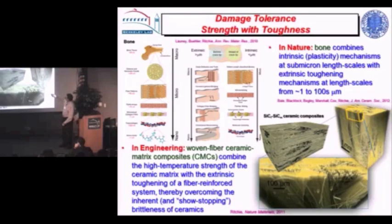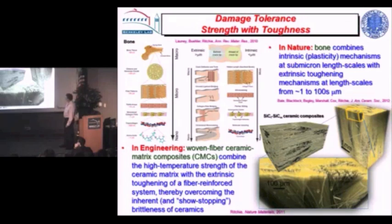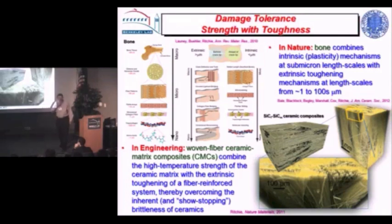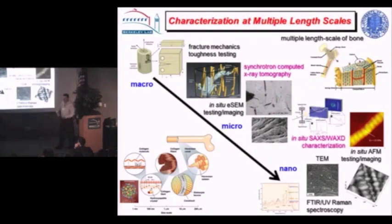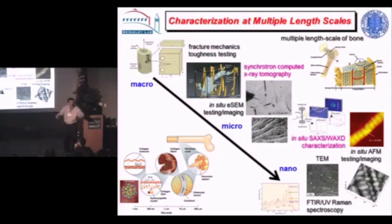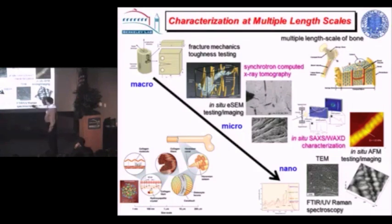Let's look at nature first — bone, where toughening comes over multiple length scales. Then we'll look at ceramic composites. These are primarily silicon carbide reinforced by silicon carbide, which will probably revolutionize aerospace engines. To look at multiple length scales we go from macro to near-nano. We do fracture mechanics tests at the macro scale to measure toughness, and at the micro scale I prefer in-situ techniques. Tomography can be done in-situ, but not with bone because the x-rays destroy the bone.